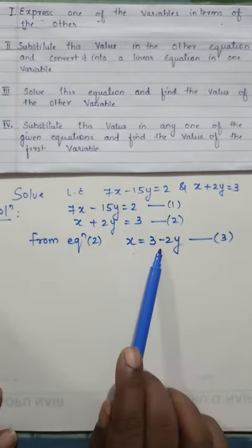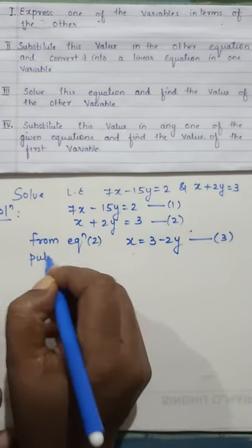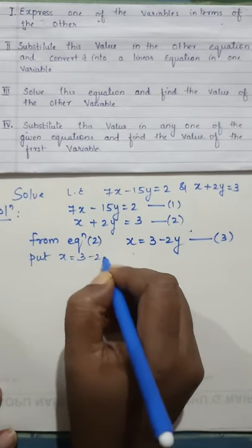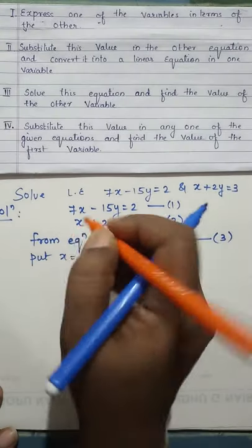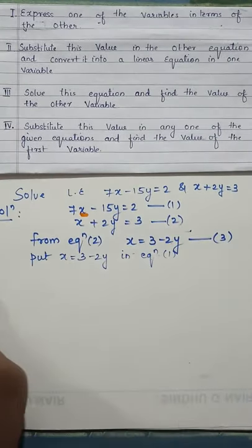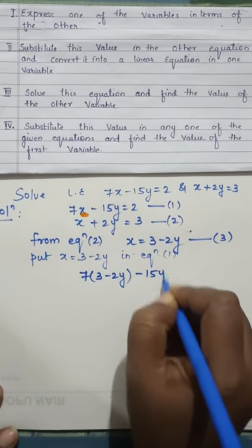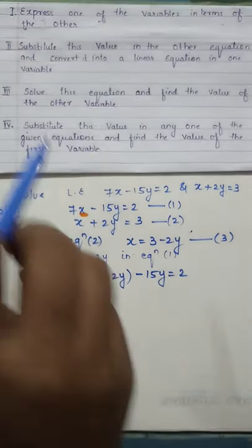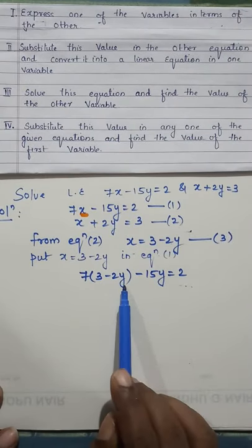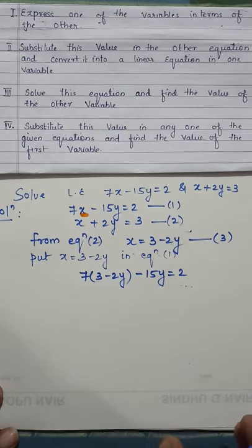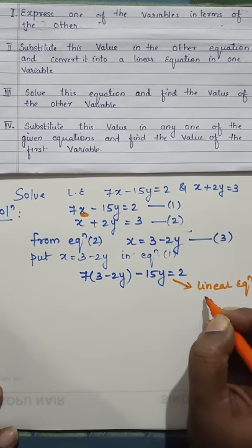Now I am second step. Substitute this value in the other equation. Now I have used equation 2, I will be using equation 1. So put x equal to 3 minus 2y in equation number 1. In equation 1, wherever x is there, you can see x, there I will be putting this. So it will become 7 into 3 minus 2y minus 15y equal to 2. This is our second step, substituting the value in other variable and converting into linear equation. Now if you check this, it is a linear equation in one variable because the other variable x is not there. So this is a linear equation in variable y.